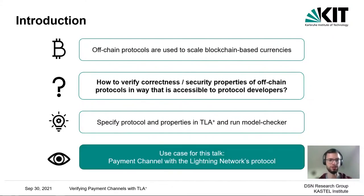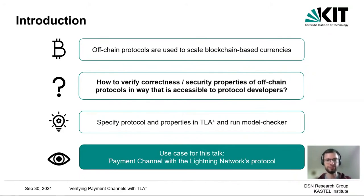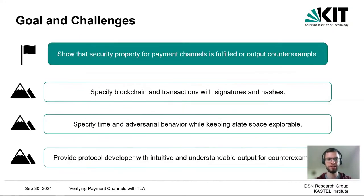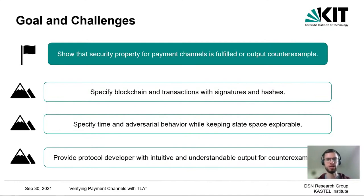The use case we are looking at is a payment channel protocol—specifically the Lightning Network's protocol. The Lightning Network is a payment channel network developed for Bitcoin that has already been deployed, with multiple clients and an informal specification. Our goal is to show that the security property for payment channels is fulfilled, or if not, for an insecure variation, to output a counter example so one can find the flaw.